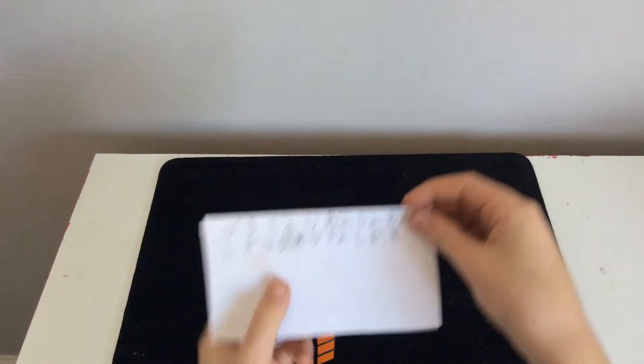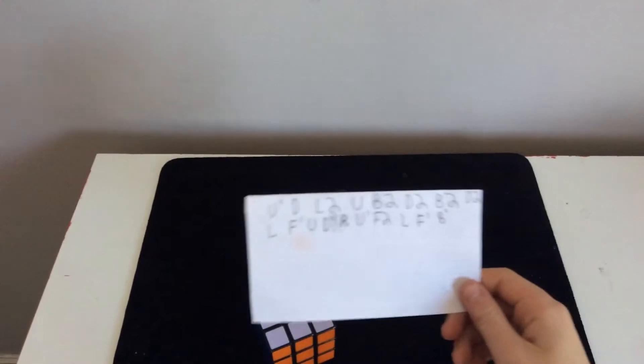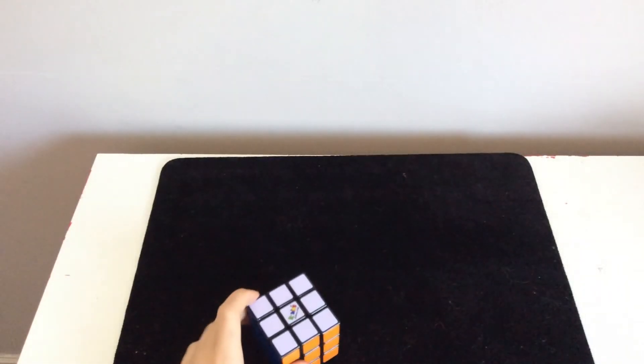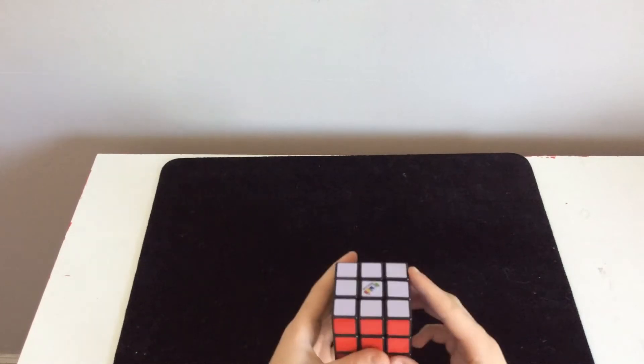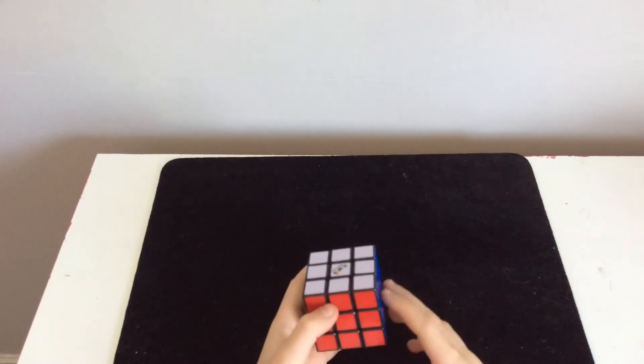The algorithm is right here, and I'm going to be putting it in the description anyway, so if you don't want to see it right now, you can pause the video and look at this. If you want to follow with me, you want to have the white on top, the red in front of you, and the blue on your right side.